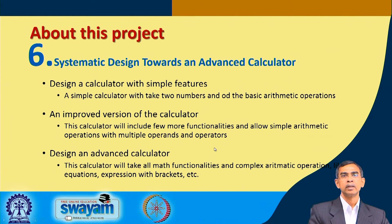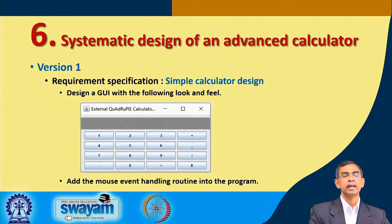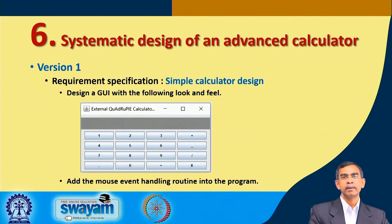Let us discuss the flow of the projects — the different steps or versions of the project. In the first version, as you are familiar, we have developed this kind of project using applets. You can also do it using a simple non-applet program using Swing or AWT. Both applet version and non-applet version programs can be written for this purpose.